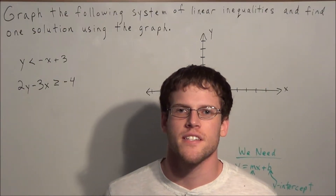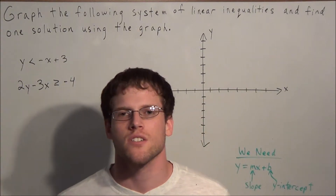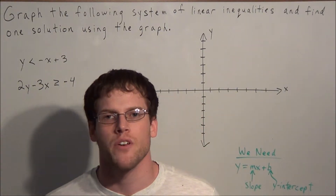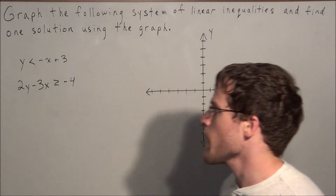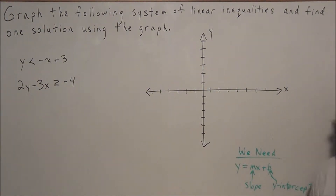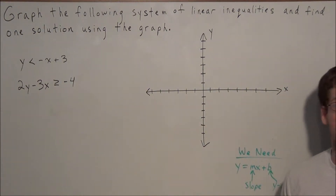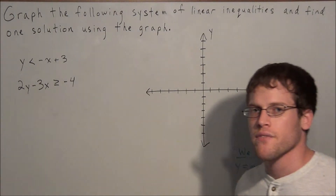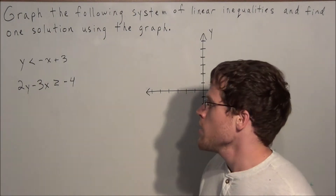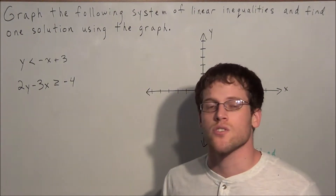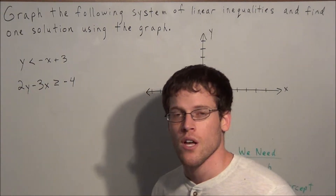Hi, my name is Vincent and today I want to take a look at solving a linear system of inequalities using a graph. So we have the problem: graph the following system of linear inequalities and find one solution using the graph. We have y is less than negative x plus 3, and we also have 2y minus 3x is greater than or equal to negative 4.